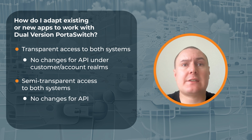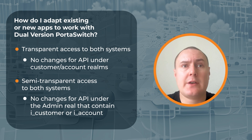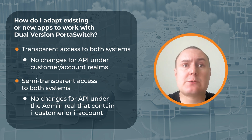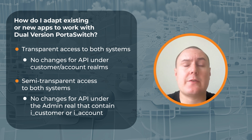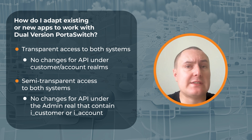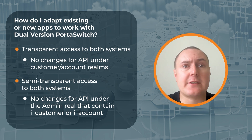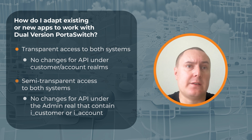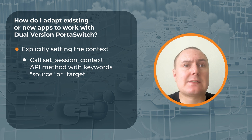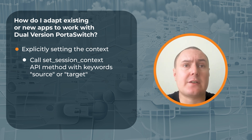Next, there is semi-transparent access to both systems, meaning that the context detection is partial. For example, if you are using API under the admin realm, like getCustomerInfo or updateAccount, your request will contain iCustomer or iAccount, so the system will automatically detect the location of the entity and execute those requests on the required system. However, if your external signup portal creates a new customer, web dispatcher won't know on which system this customer should be created. Thus, your signup portal should explicitly call the setSessionContext API method. If it doesn't happen and the system can't determine the context, the request will always be forwarded to the target system. Finally, there is the method of explicitly setting the context — for cases like when you need to get the list of all XDRs from a specific system. In this case, the context will be set explicitly.